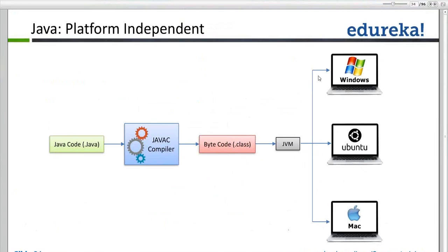This JVM will not come by default. When you install Windows, JVM will not come. You have to install it separately — then only JVM will come. By default, if you install Windows 7, Ubuntu, or Mac, JVM will not come. Java Runtime Environment will not come — you have to install it separately. That particular JVM is available for each and every operating system.